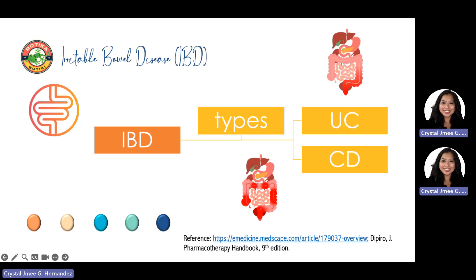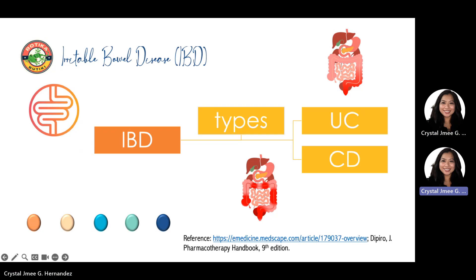Inflammatory bowel disease encompasses two types of idiopathic intestinal disease that are differentiated by their location and depth of involvement in the bowel wall. Ulcerative colitis or UC involves diffuse inflammation of the colonic mucosa. Most often, UC affects the rectum, also called proctitis, but it may extend into the sigmoid, called proctosigmoiditis, beyond the sigmoid called distal ulcerative colitis, or include the entire colon, called pancolitis.